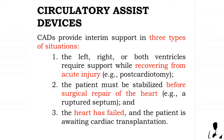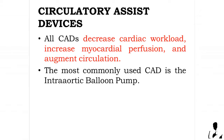Circulatory assist devices provide interim support in three types of situations: one, the left, right, or both ventricles require support while recovering from acute injury; two, the patient must be stabilized before surgical repair of the heart, for instance a ruptured septum; and three, the heart has failed and the patient is awaiting cardiac transplantation.